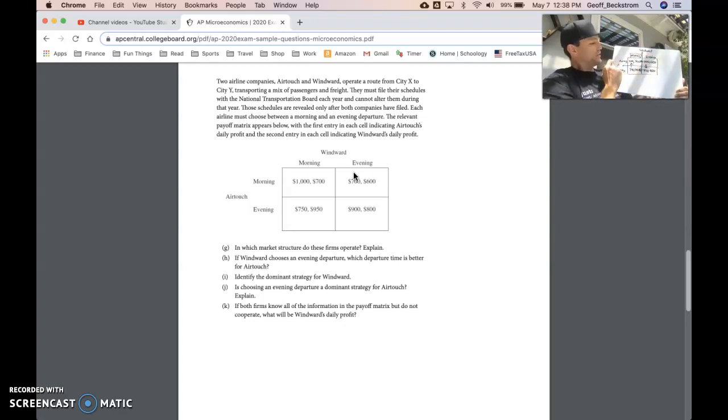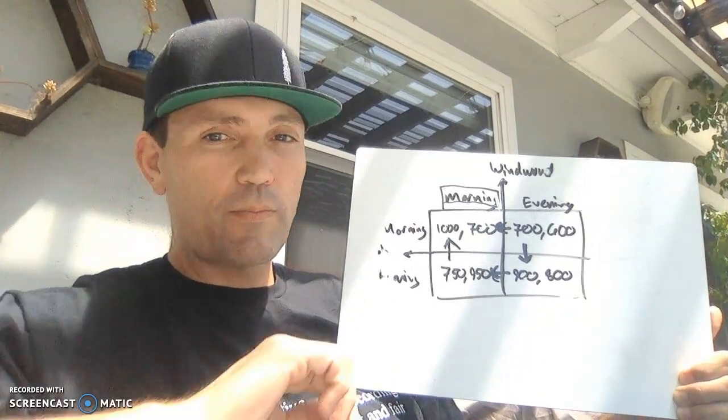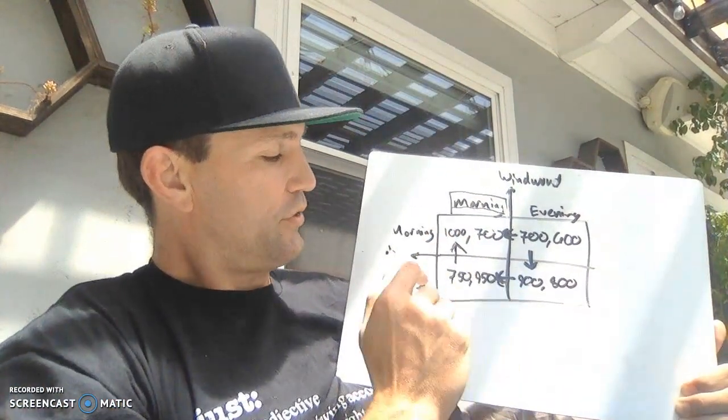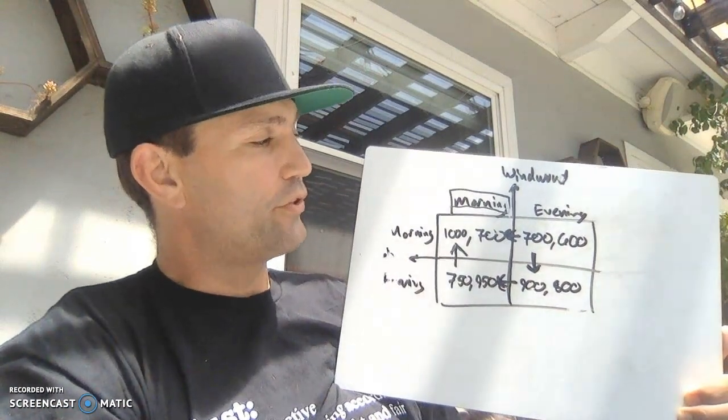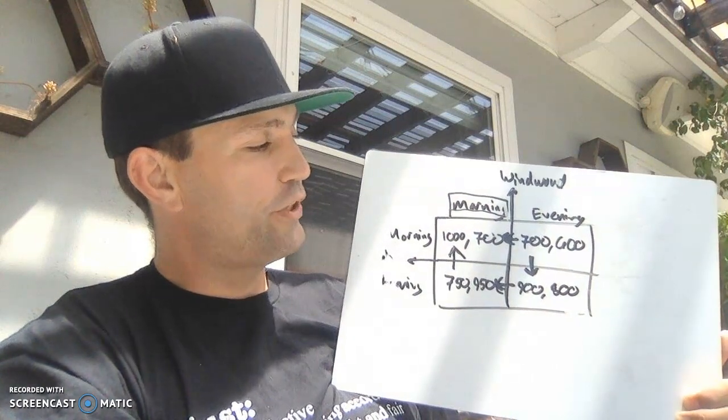So for Windward, morning or evening, if Air Touch chooses morning, Windward would rather have 700 than 600. So I drew my arrow pointing this way across that line, and down here if Air Touch chooses evening, Windward would rather have 950 than 800. So I drew my arrow in that direction. In this case, we can tell that morning is a dominant strategy for Windward because whether Air Touch chooses morning or evening, the morning departure is always best for Windward. So we have a dominant strategy for Windward.